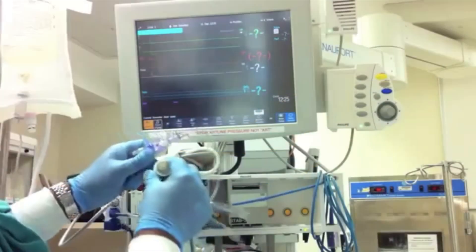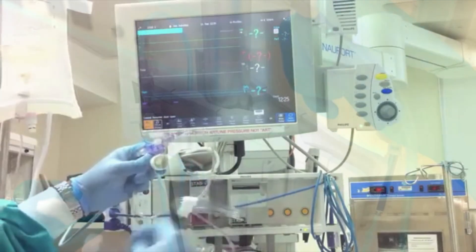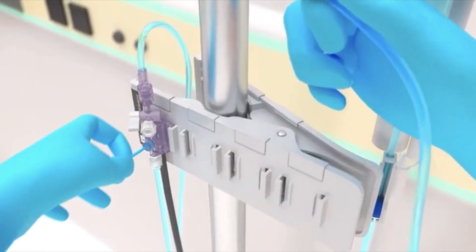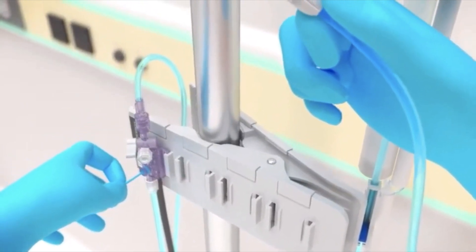The pressure tubing is attached to the corresponding color-coded port. Number 10: The pigtail is pulled and the catheter is flushed, removing all air.